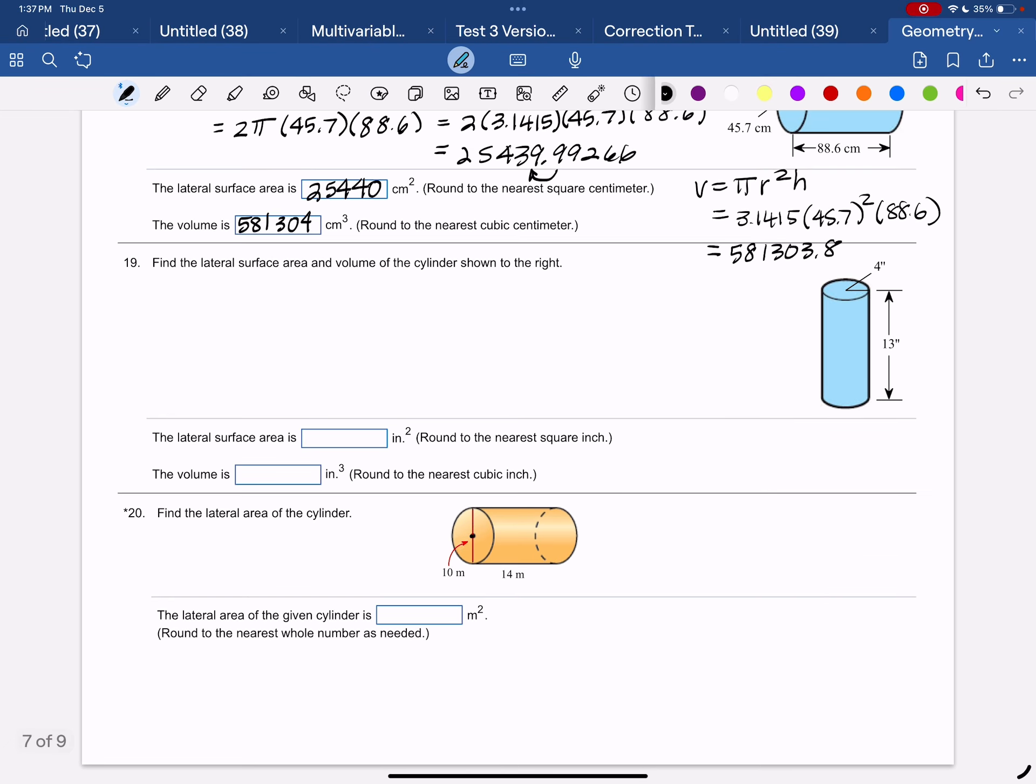Example number 19, find the lateral surface area and the volume of the cylinder. So our lateral surface area is 2 pi RH, including the top and bottom. So 2 pi, R is 4 and H is 13.